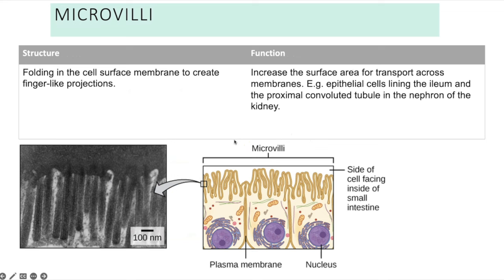Microvilli are foldings of the cell surface membrane that create finger-like projections, increasing the surface area for transport across the membrane. For example, epithelial cells lining the ileum have microvilli to maximise the absorption of glucose and amino acids after digestion. Microvilli are also found in the proximal convoluted tubule of the kidney nephron to maximise reabsorption of glucose.